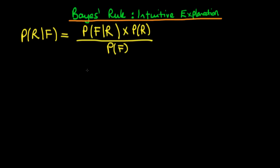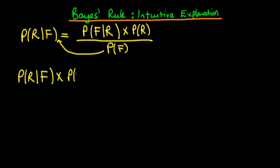So how do we think about an intuitive explanation as to what's going on in this formula? Well, the first thing I do is multiply through by the denominator of the right-hand side. That gives me an expression which is that the probability that it rains, given that it is forecast to rain, times the probability that it is forecast to rain, is equal to the numerator of our original expression — the probability that it is forecast to rain, given that it does rain, times the probability that it actually does rain.